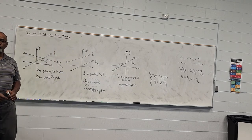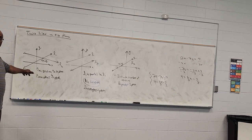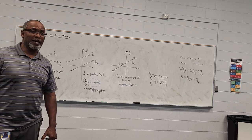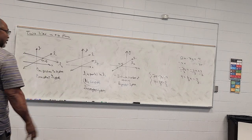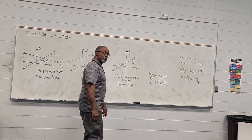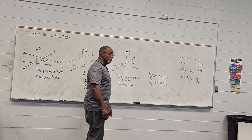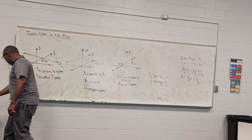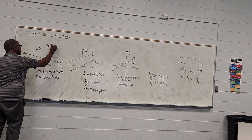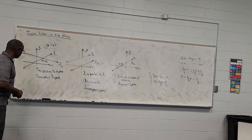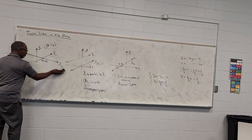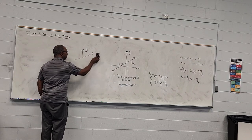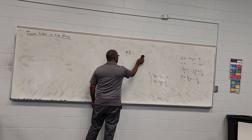Those are the three possibilities. If two lines cross at a single point, there's one unique solution — that's a consistent system. If the lines are parallel, there's no solution — that's an inconsistent system. If the two lines are actually the same line, there's an infinite number of solutions. This information is in a chart on page 767.